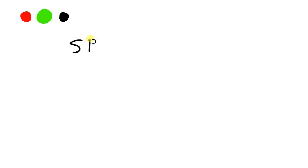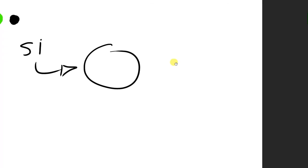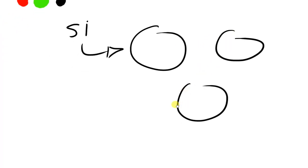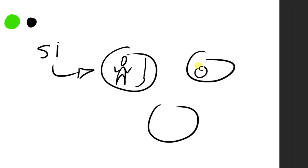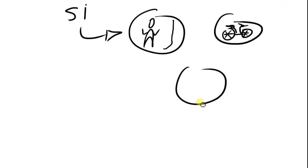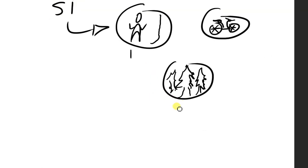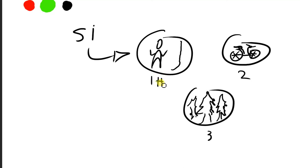So let's start with SI — introverted sensing. Introverted sensing is a way of gathering data from memories, concrete data. The user of introverted sensing has bubbles inside their mind, and these bubbles are memories. They could be about anything. These memories are very detailed and categorized — like number one, number two, number three, or maybe a name. Very detailed memories.